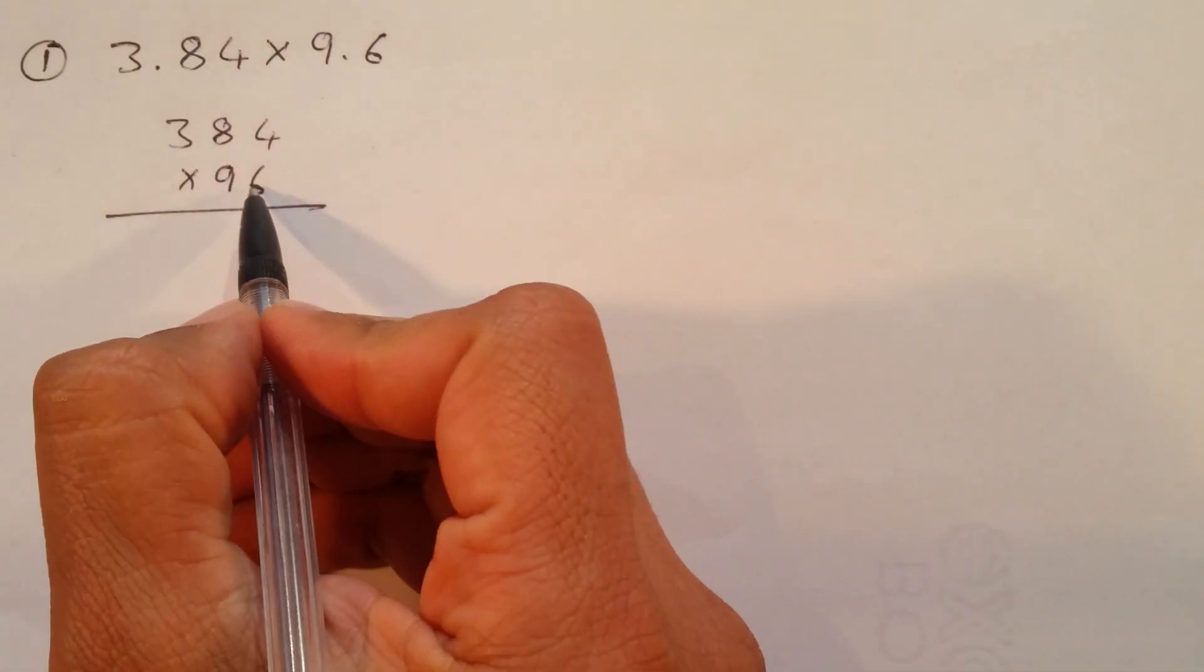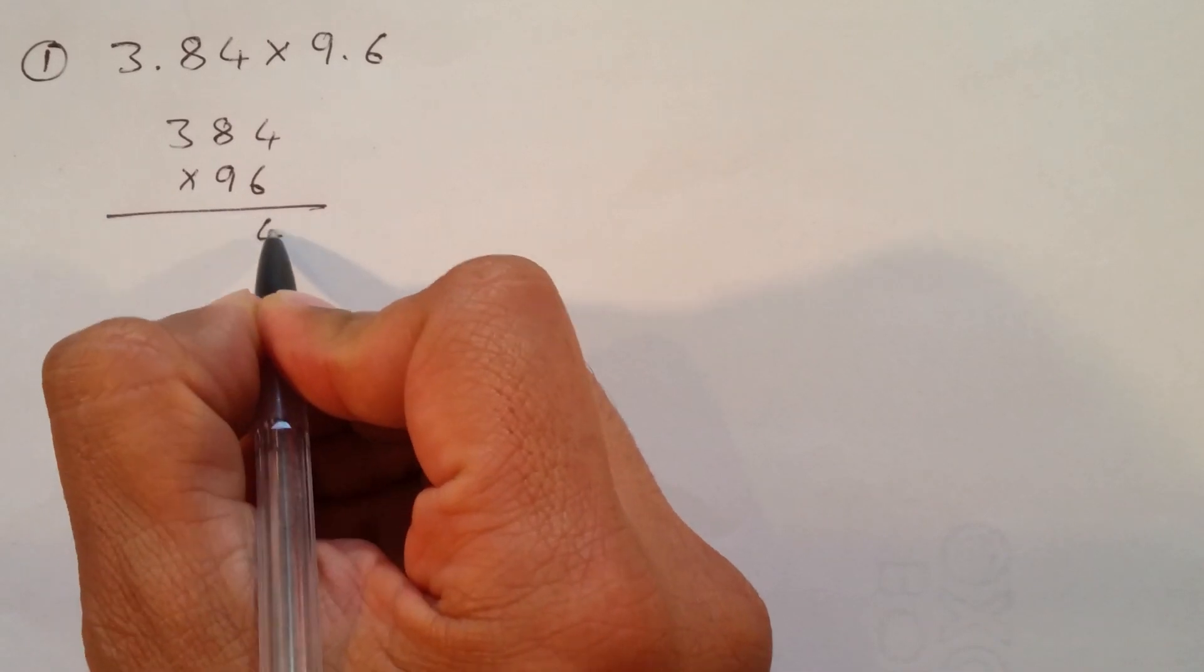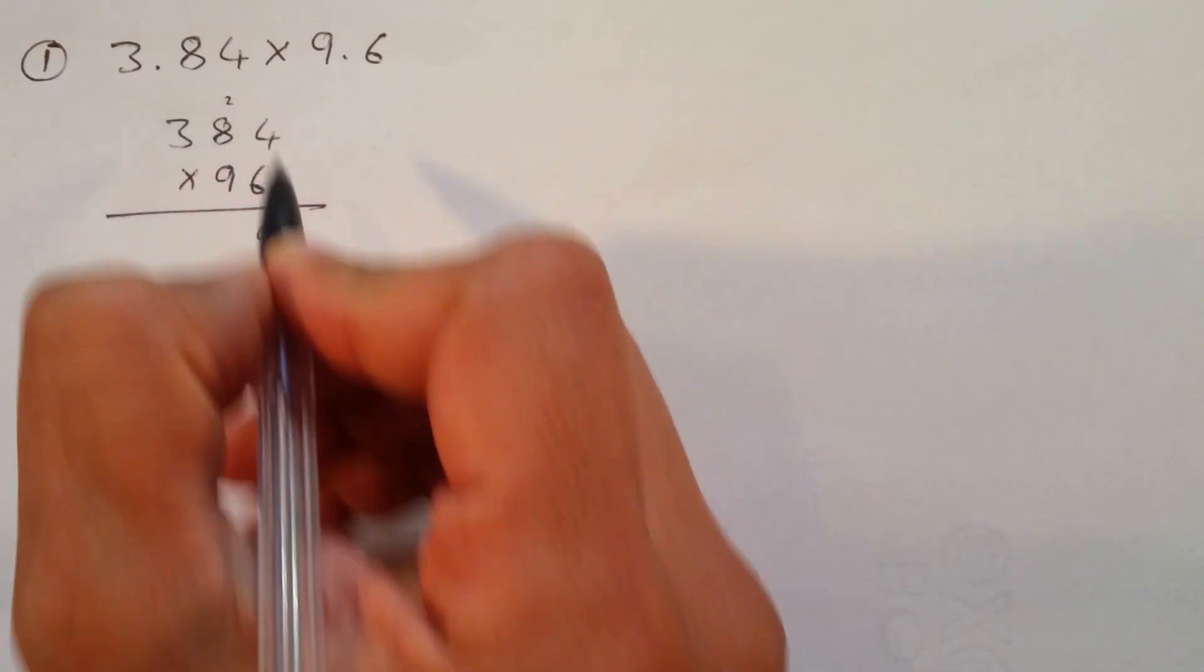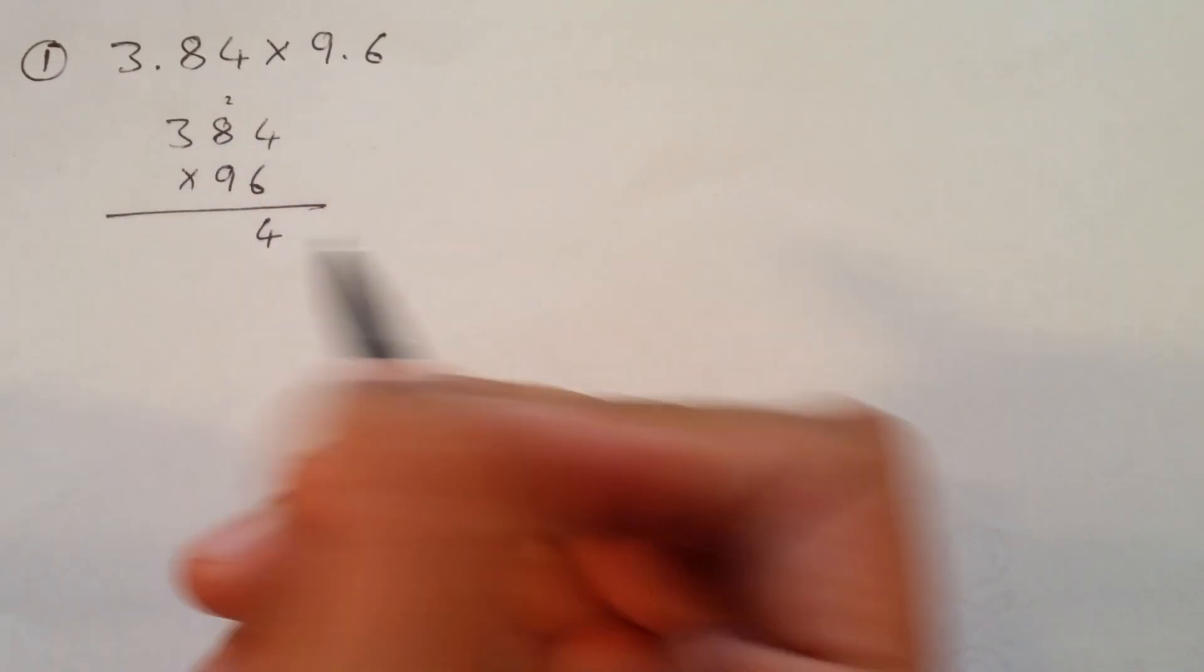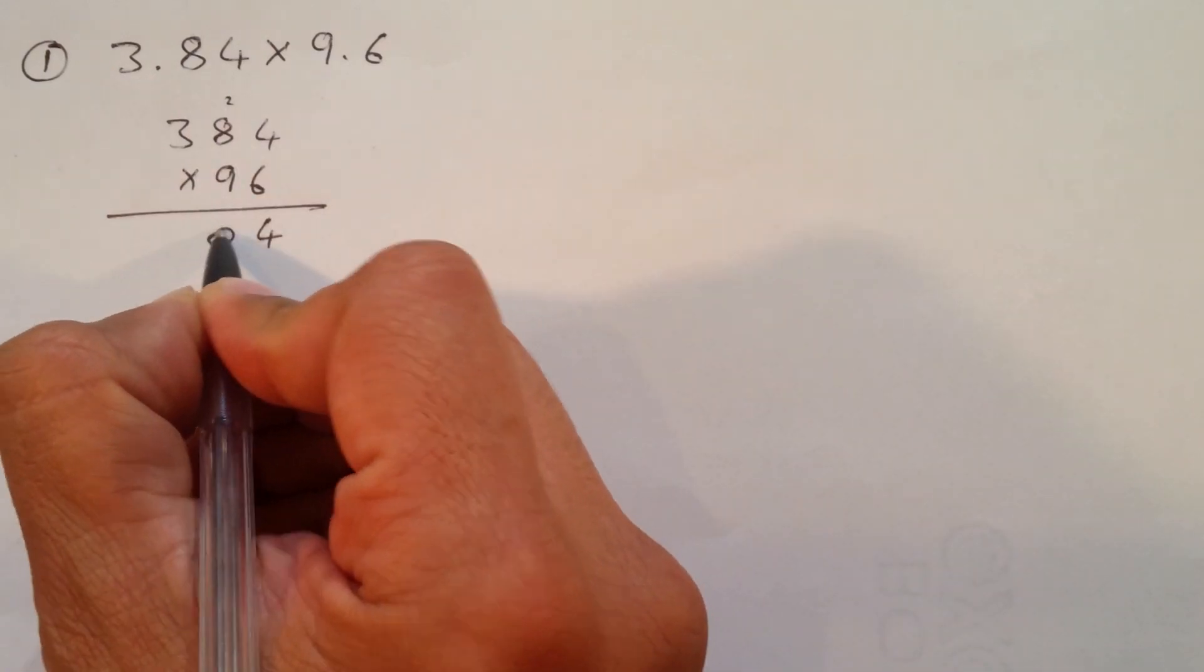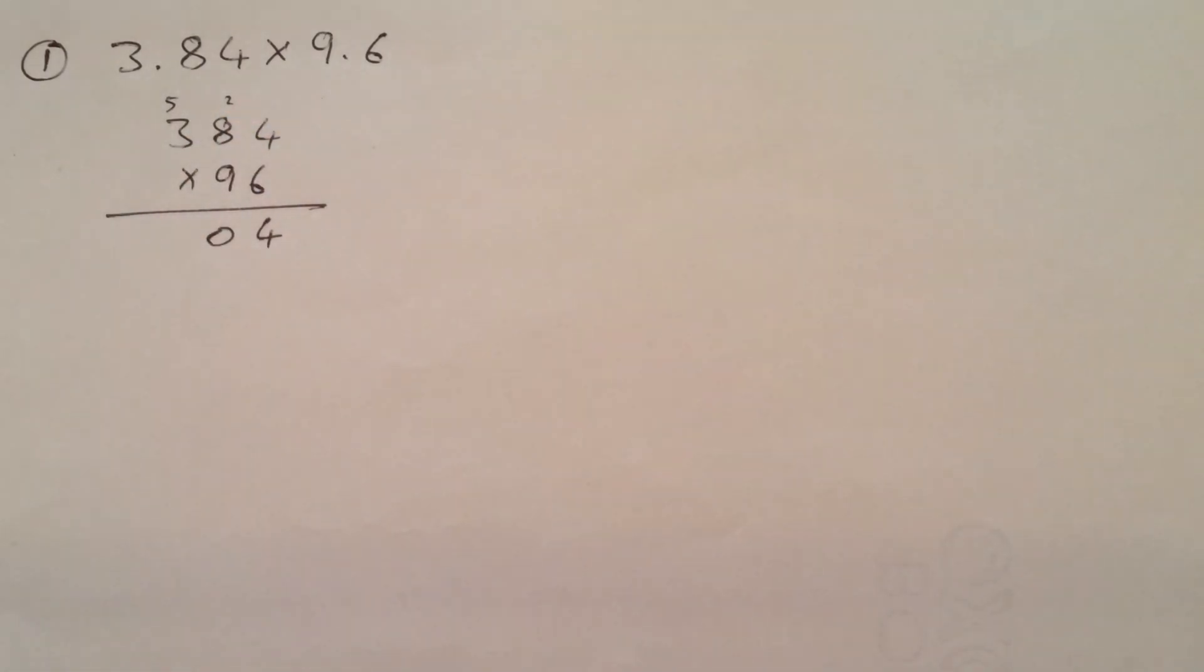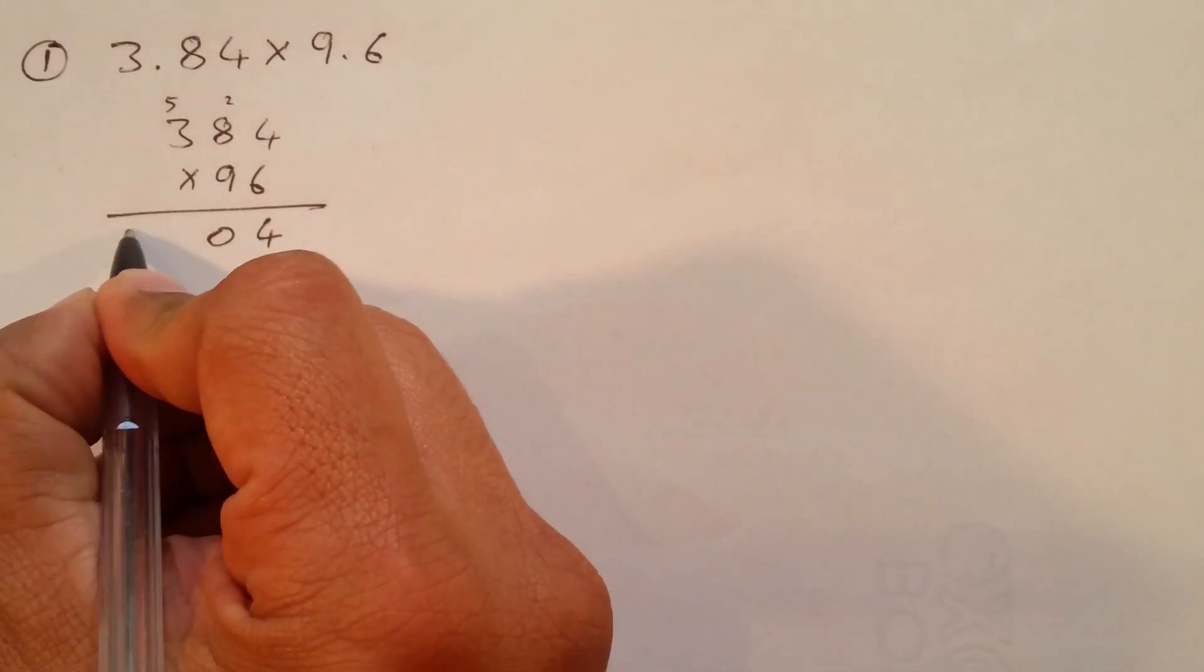You'll start with the 6 and multiply with all of them. 6 times 4, which is 24, carry 2. 6 times 8, 48. Plus 2, which is 50. And 6 times 3 is 18. Plus 5, which is 23.